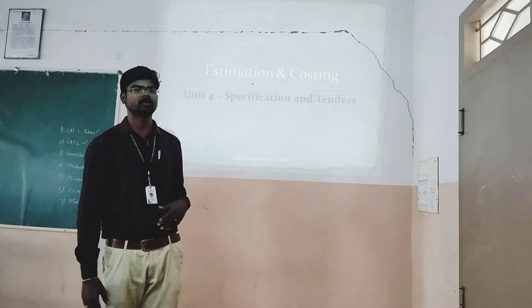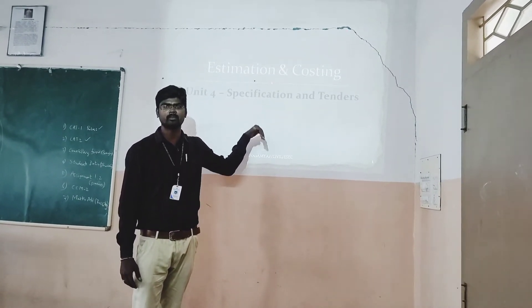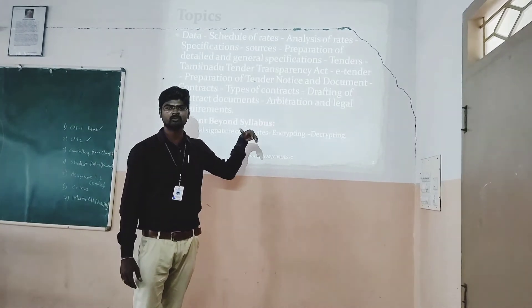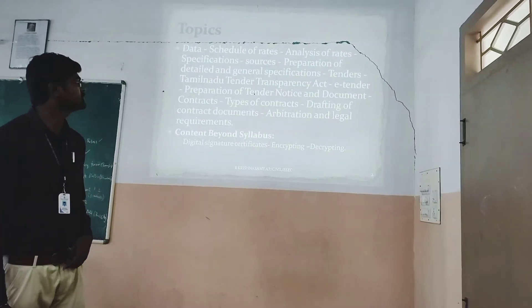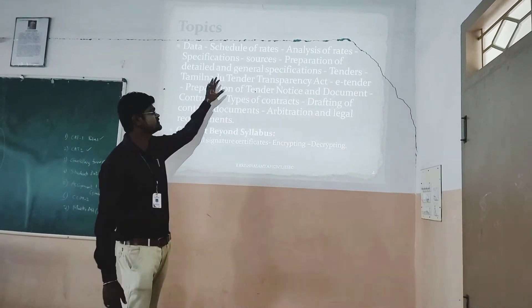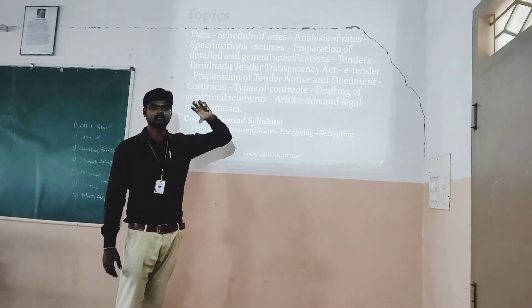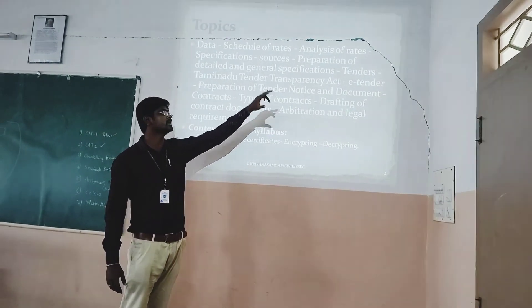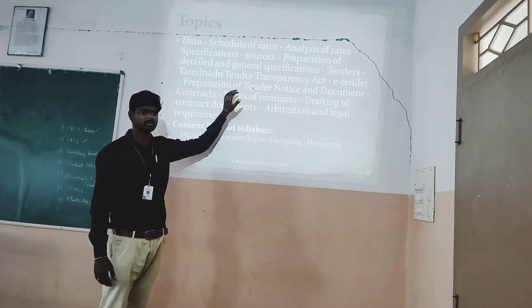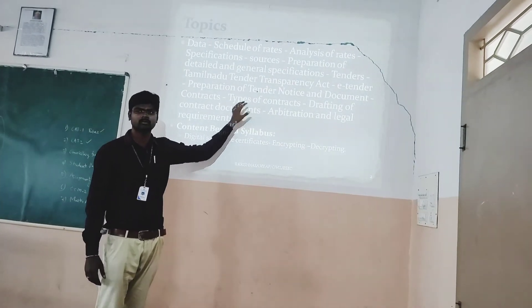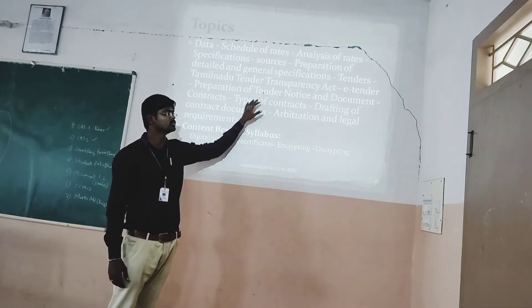In this video, we will talk about Estimation and Costing, Unit 4: Specification and Tenders. We will cover topics including data, schedule of rates, and analysis of rates. We will discuss preparations, detailed specification, and general specification. Then we will talk about tenders, the Tendering Act, and e-tender, as well as tender notices. The third topic is contracts, including types of contracts and legal procedures. These three topics cover Unit 4.